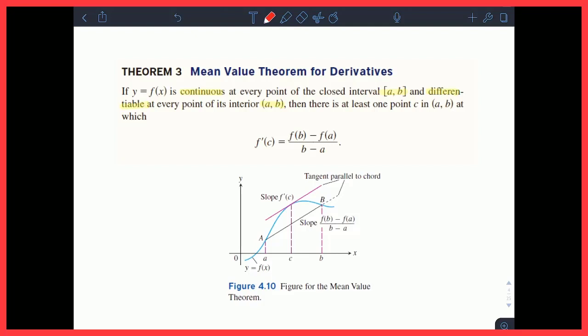If you have those two criteria satisfied, then there's at least one point c in the interval [a, b], it's an x value, at which the derivative exactly at c, so f'(c), which is the instantaneous rate of change, is equal to f(b) minus f(a) over b minus a, which is the average rate of change over the interval [a, b].